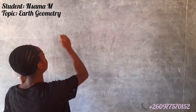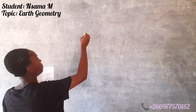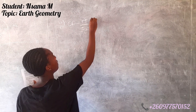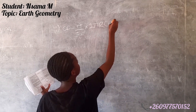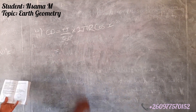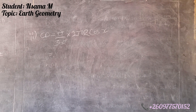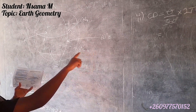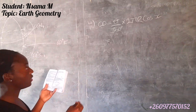Here we are going to write how to find the distance for CD so that we can find our speed. CD equals theta over 360 degrees, times 2πR cos x. Why have we added cos x there? Because CD is the longitude, that's why we're using the latitude formula. This is our formula for finding latitude, so that's why we're adding cos x.